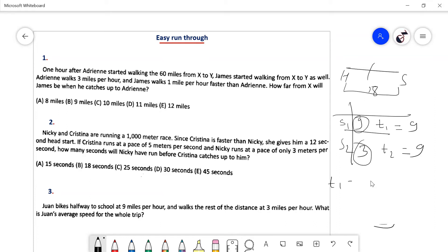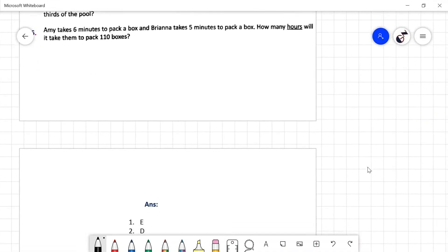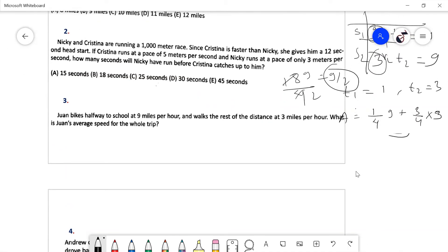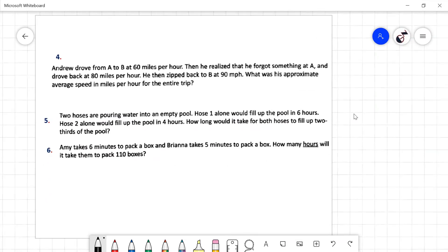Let the distance be 9 miles total. T1 is distance over rate, 9 by 9 equals 1. T2 is 9 by 3 equals 3. The average speed is total distance over total time: 18 divided by 4 equals 18 by 4, which is 9 by 2, or 4.5 miles per hour.